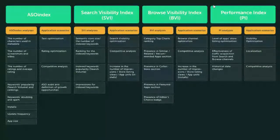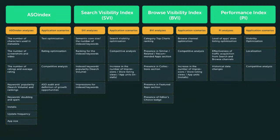Let me share my screen. We now have four indices in our system. The first is the ASO Index, which shows basic page optimization quality. The second is the Search Visibility Index, about app visibility in terms of search traffic — everything related to keywords from Google Play and App Store, all organic installs from keywords. The third is the Browse Visibility Index, about visibility in browse and explore channels — top charts, related apps, similar apps, and different app compilations.